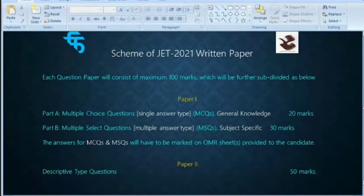Then Part B of Paper 1, which has multiple select questions, MSQs, will be subject-specific to the course you are applying for. For acting, there would be questions pertaining to acting only. For direction, it will be subject-specific questions worth 30 marks.